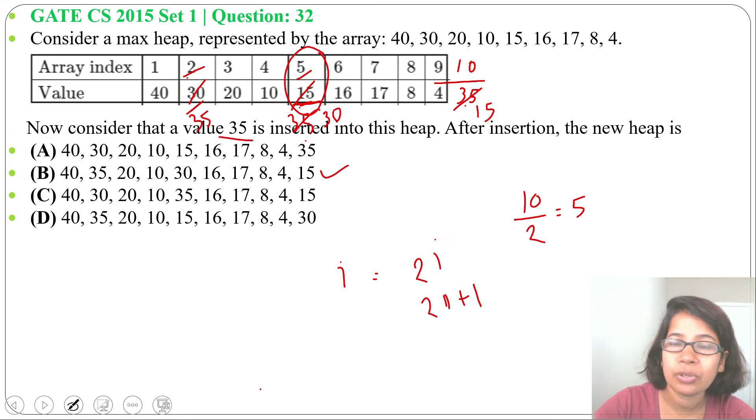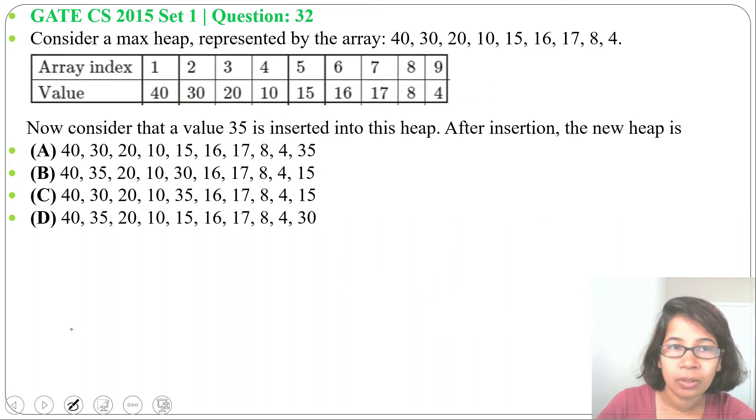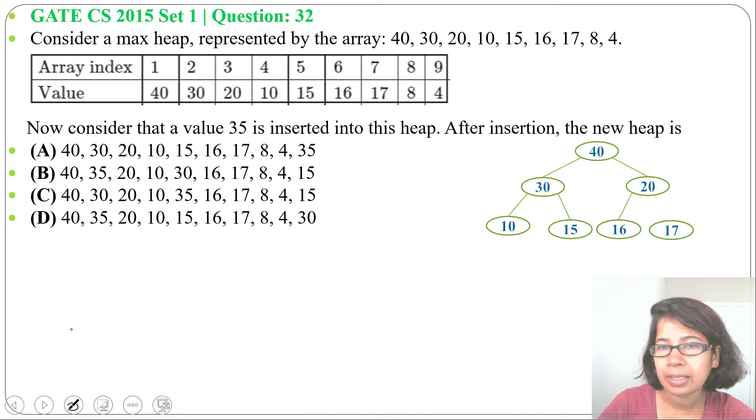If you are not understanding this process, let me construct the max heap in tree format. You can insert it this way. The root will be 40, its children will be 30 and 20. Next, 30's children will be 10 and 15. 20's children are 16 and 17, and 10's children are 8 and 4.